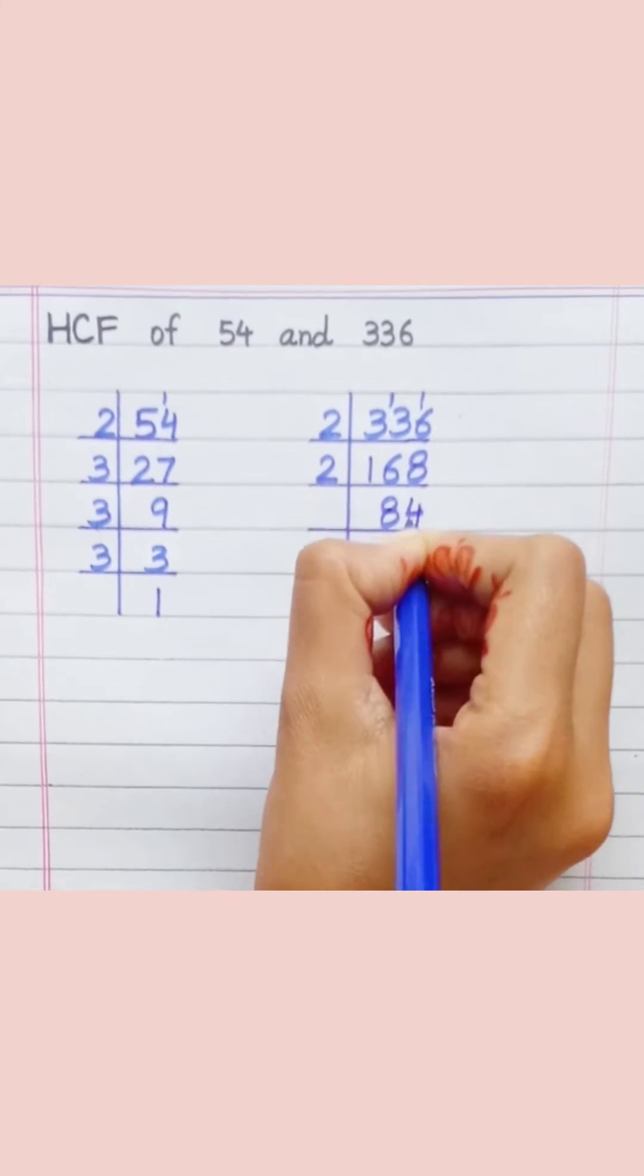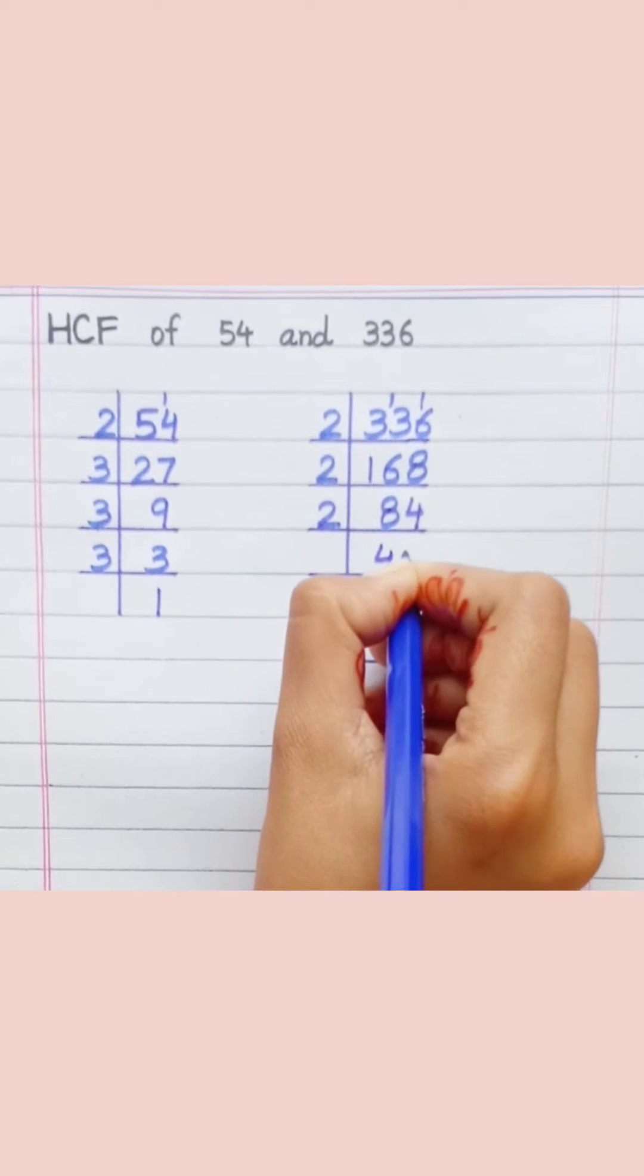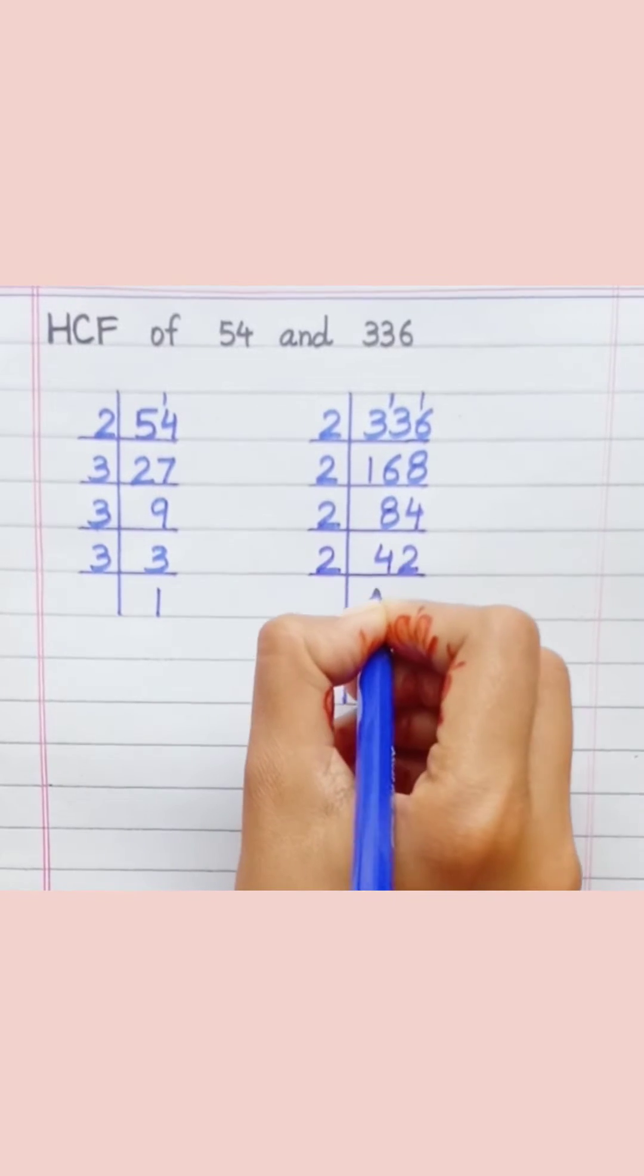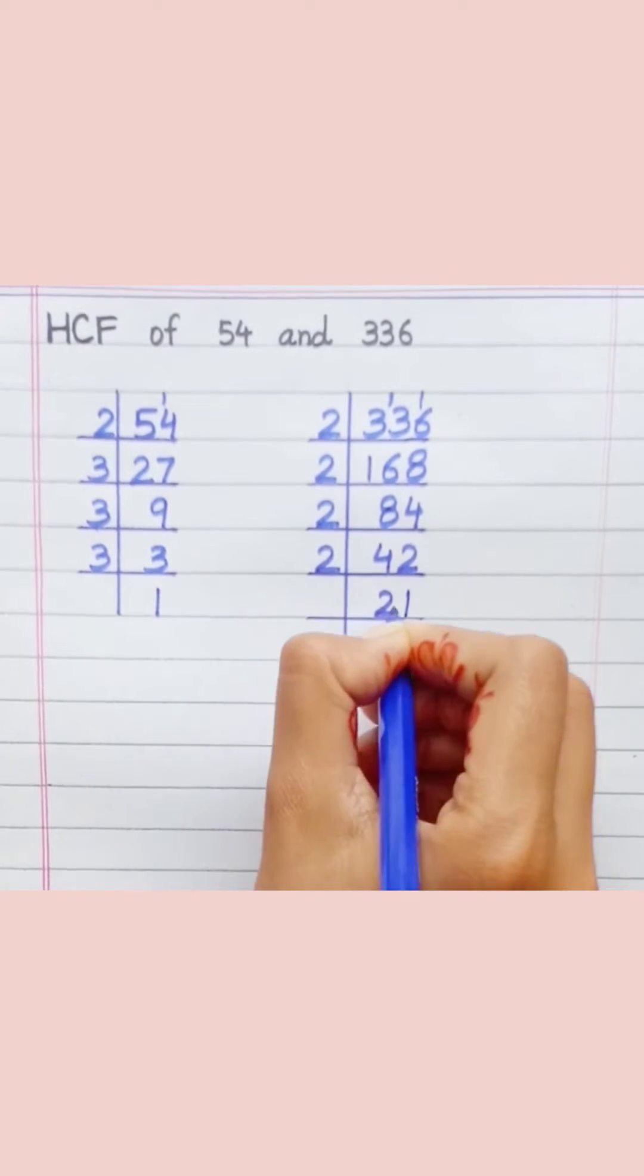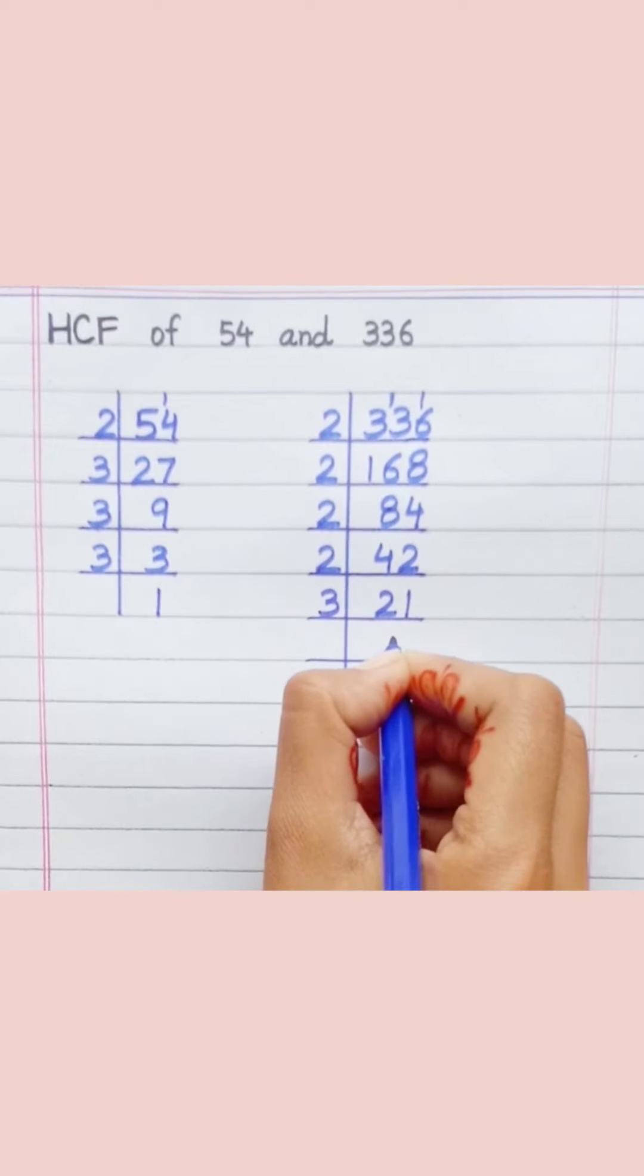2 times 4 is 8. 2 times 4 is 8. 2 times 2 is 4. 2 times 2 is 4. 2 times 1 is 2. 3 times 7 is 21.